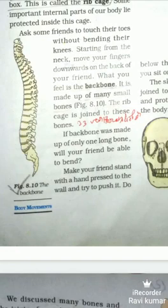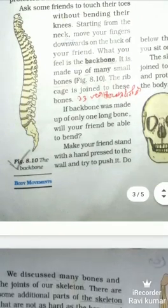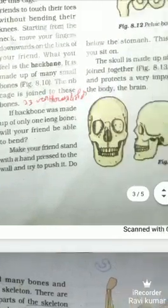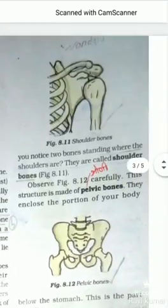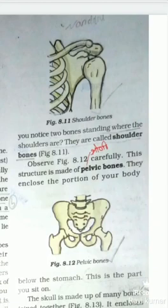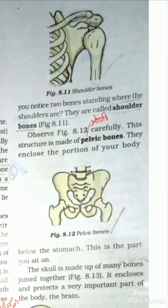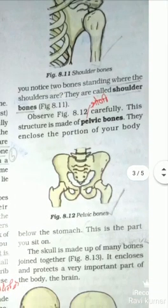Make your friend stand with a hand pressed to the wall and try to push it. Do you notice two bones standing out where the shoulders are? You can see two big bones there — they are called shoulder bones. Observe figure 8.12 carefully.